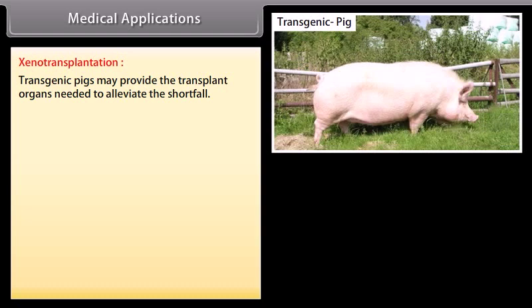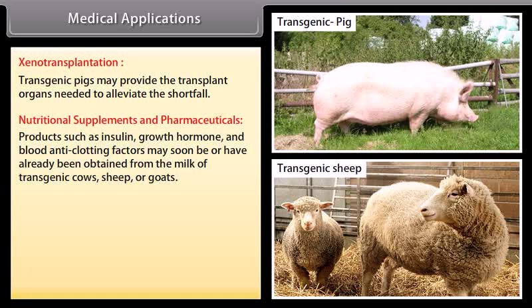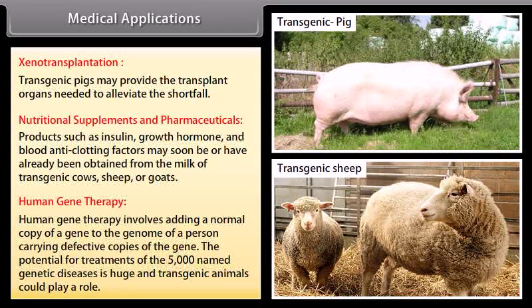Medical Applications — Xenotransplantation: Transgenic pigs may provide the transplant organs needed to alleviate the shortfall of available organs. Nutritional Supplements and Pharmaceuticals: Products such as insulin, growth hormone, and blood anti-clotting factors may soon be or have already been obtained from the milk of transgenic cows, sheep, or goats. Human Gene Therapy: Human gene therapy involves adding a normal copy of a gene to the genome of a person carrying defective copies. The potential for treatment of the 5,000 named genetic diseases is huge, and transgenic animals could play a role.